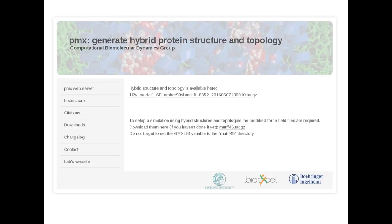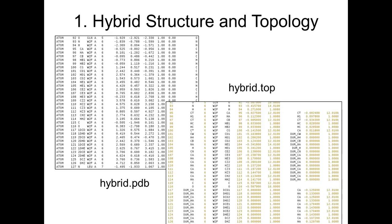The two output files from the web server are a hybrid topology and a hybrid structure. You'll notice a column showing W2F, confirming that tryptophan has been mutated to phenylalanine. The server is cleaned occasionally, so we suggest downloading the files to your own machine rather than relying on the link.